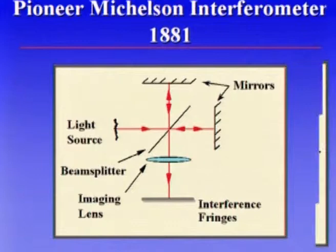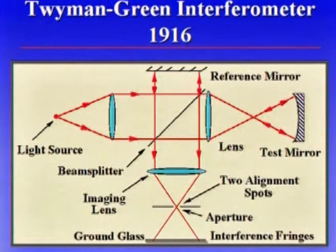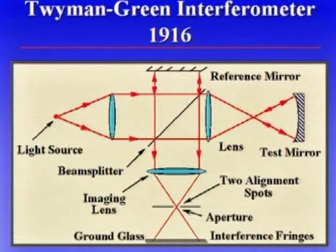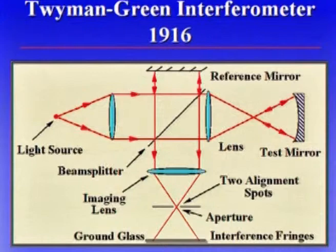Twyman and Green took what was basically the Michelson interferometer and used a small source instead of the large source Michelson used, and they got a patent on this in 1916. They used this technique for testing lenses, testing mirrors, testing prisms, and so on. The basic idea: light comes in, you have a reference arm, light goes up to the reference arm and back, and light goes to whatever you're testing. You'll get interference fringes that tell you how the optics depart from the right shape. So that's 1916.